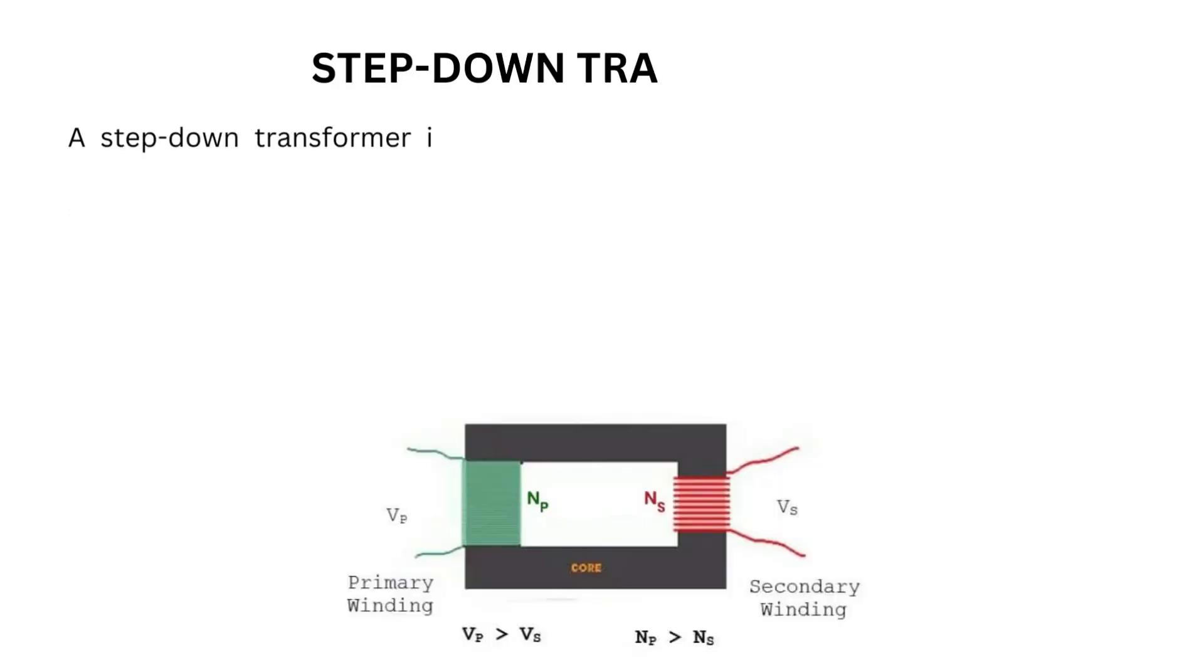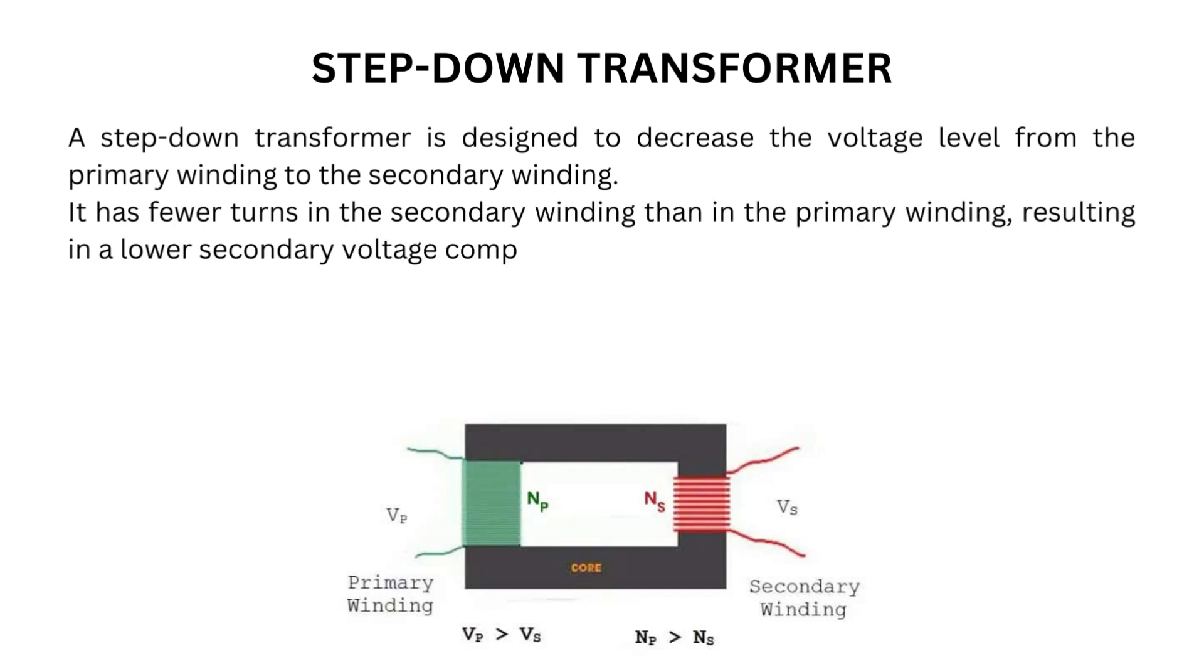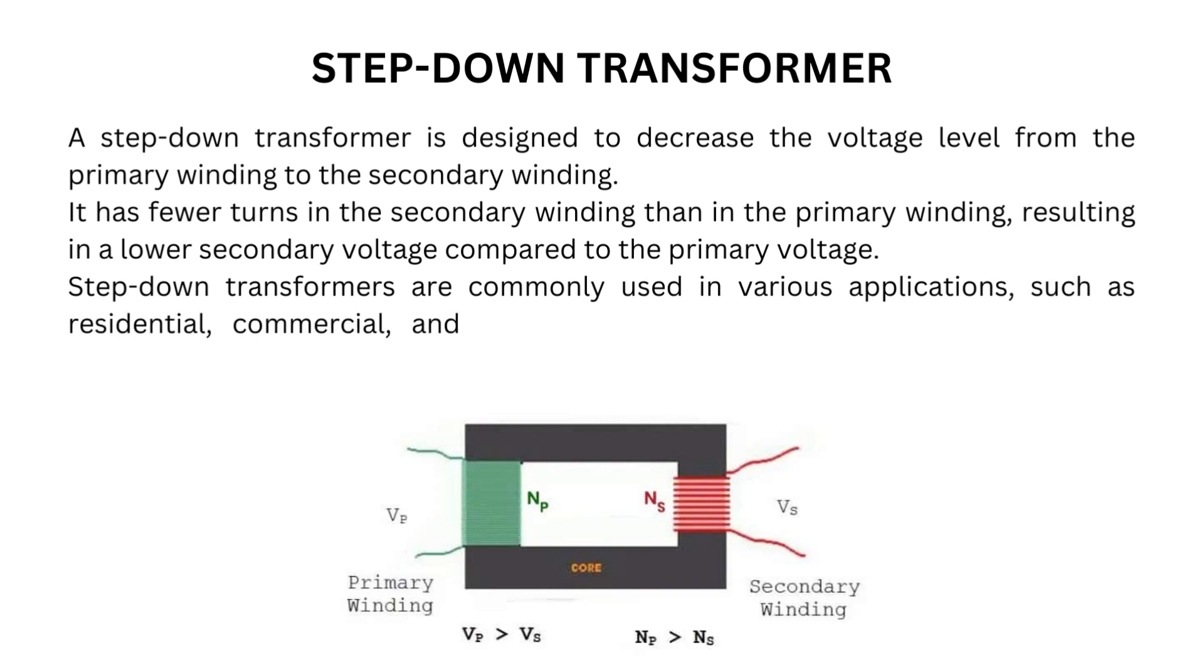A step-down transformer is designed to decrease the voltage level from the primary winding to the secondary winding. It has fewer turns in the secondary winding than in the primary winding, resulting in a lower secondary voltage compared to the primary voltage. Step-down transformers are commonly used in various applications, such as residential, commercial, and industrial electrical systems, to provide lower voltage levels suitable for appliances and equipment.